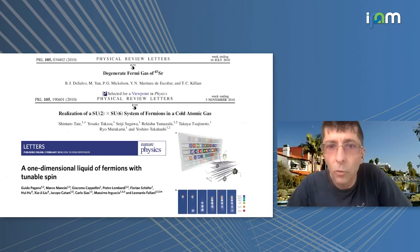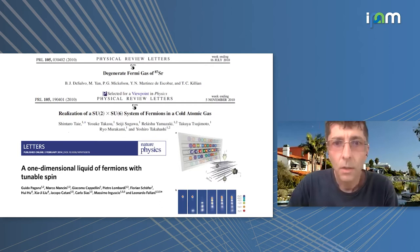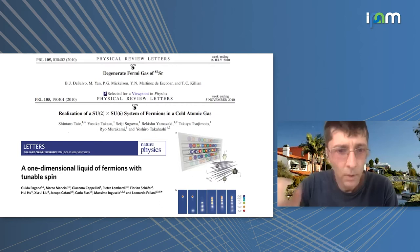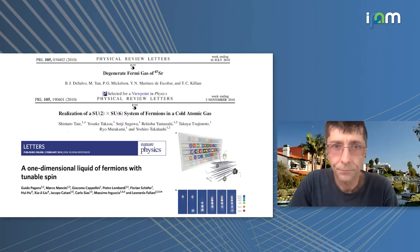For instance, there are experimental papers from the Takahashi group in Kyoto where they mix two species of ytterbium (SU(2) × SU(6)), and from the Fallani group in Florence, where they can populate a certain number of colors and really play with this SU(N) symmetry in the lab.